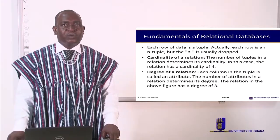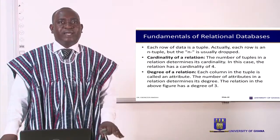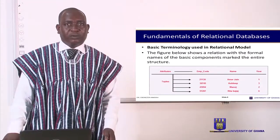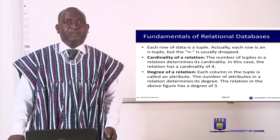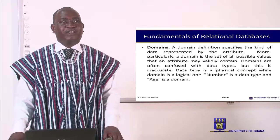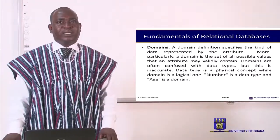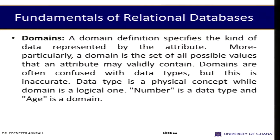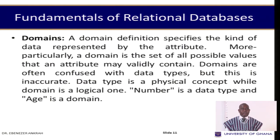The degree of a relation refers to the number of attributes in the relation under study. For the table we saw, there are three different attributes, and therefore the degree of relation is three. Cardinality is four because we have four main rows in this table. A domain definition specifies the kind of data represented by the attributes. More particularly, the domain is a set of all possible values that an attribute may contain. Domains are often confused with data types, but this is incorrect — data type is a physical concept, while domain is a logical one. Number is a data type, and age is a domain.